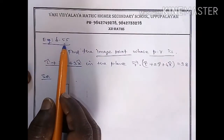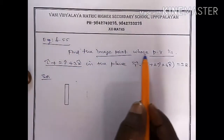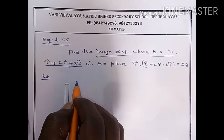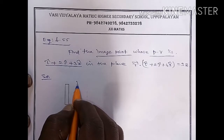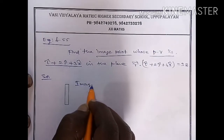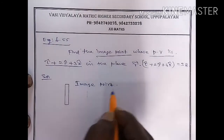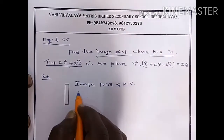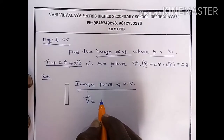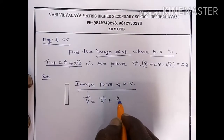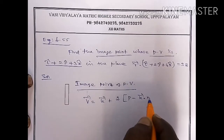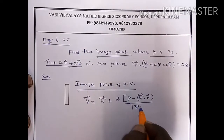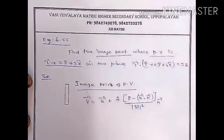Let's see example 6.55: find the image point whose position vector is given under the plane. The formula for the image point is: v vector equal to u vector plus 2 times of (p minus u dot n) divided by the magnitude of n vector squared, into n vector.